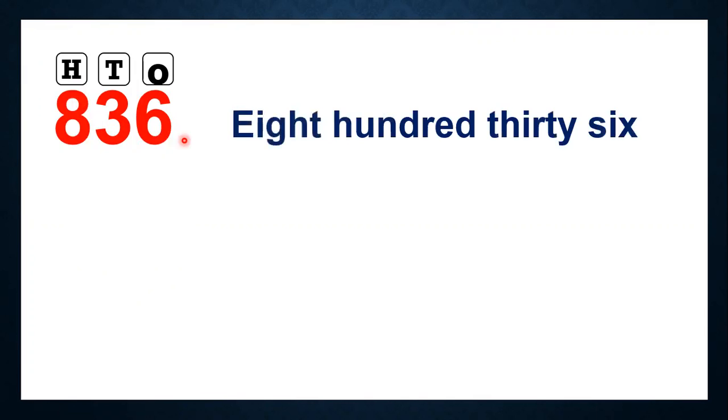So here we have 836. We know that 6 is in the 1s place, 3 is in the 10s place, and 8 is in the 100s place. So first we'll say the number — we start reading from the hundreds side, so 8 — then we say the place of the number: 836. We read 10s and 1s together, so 836.